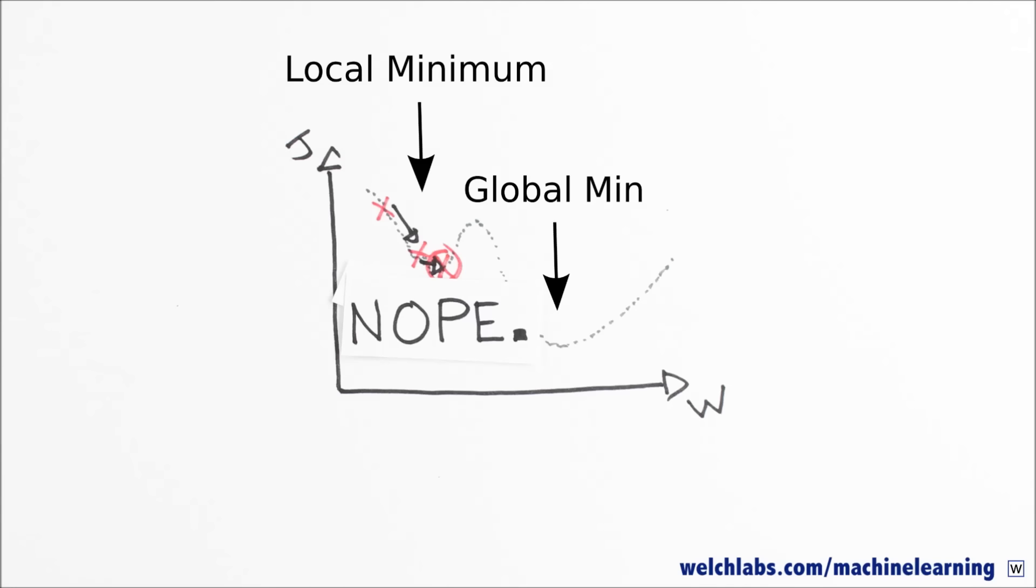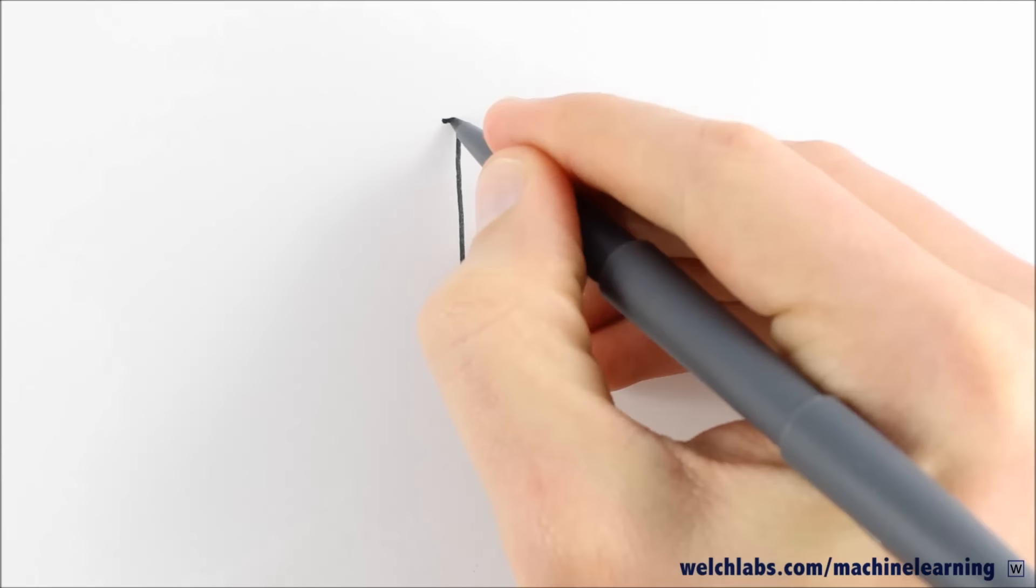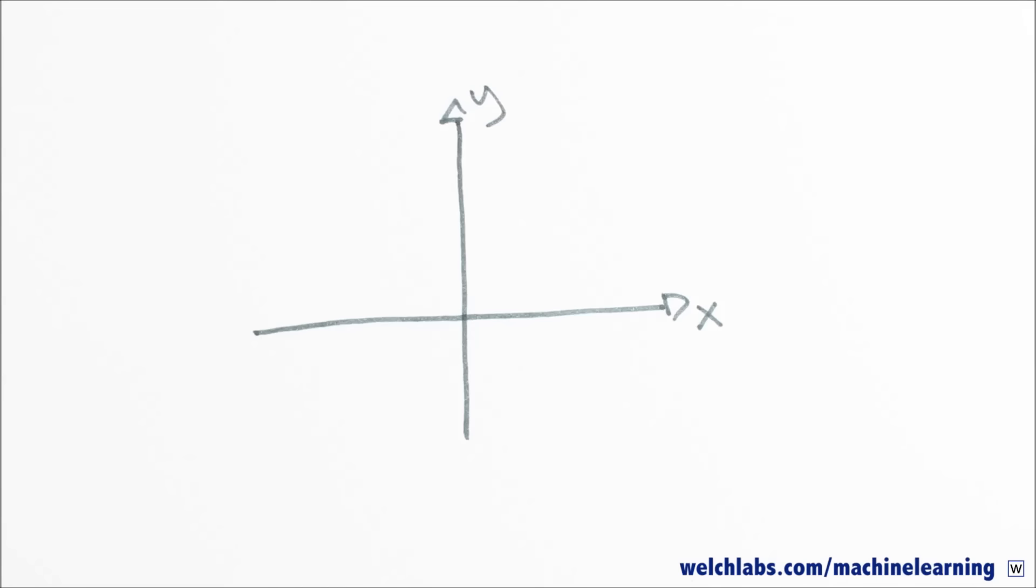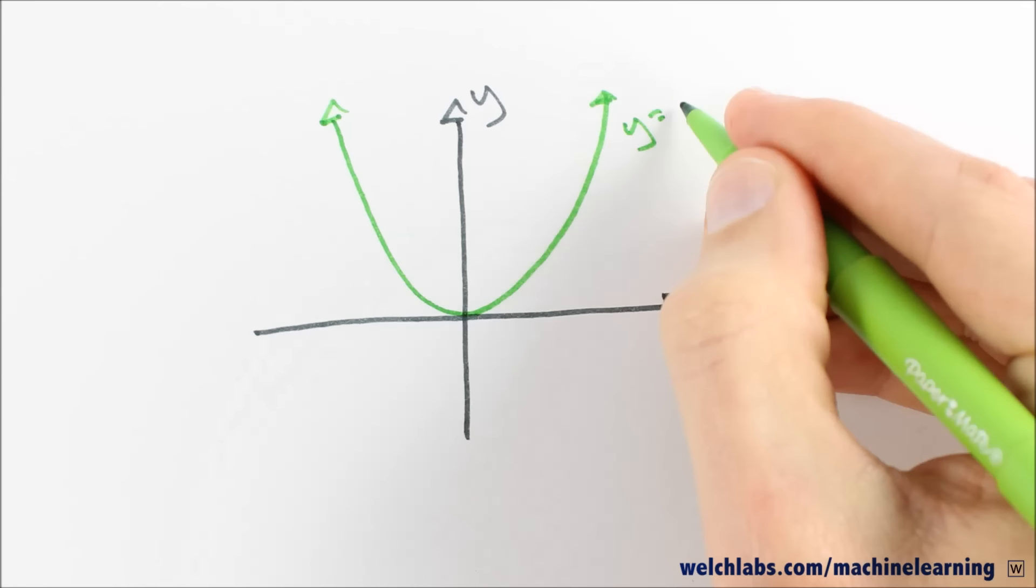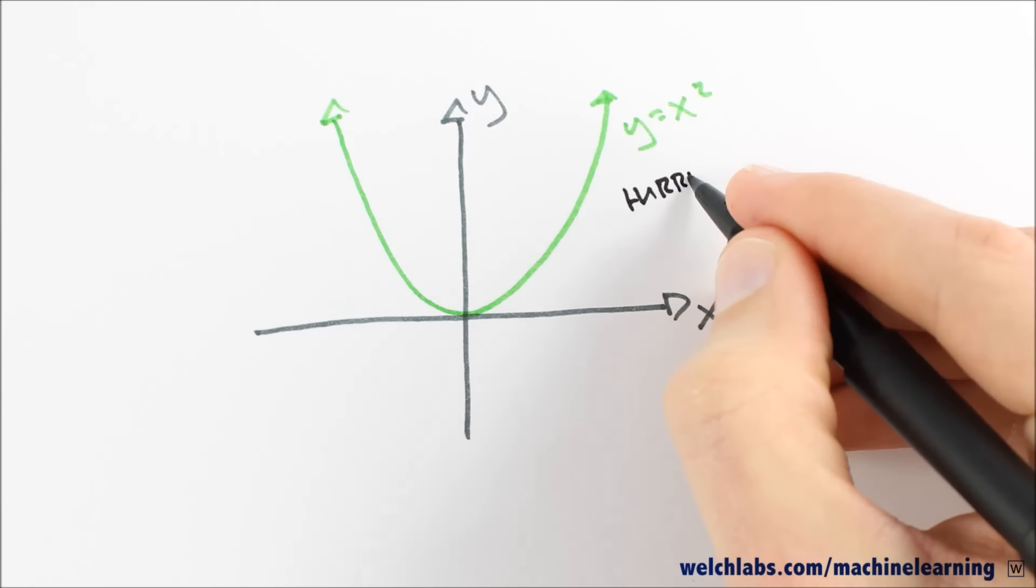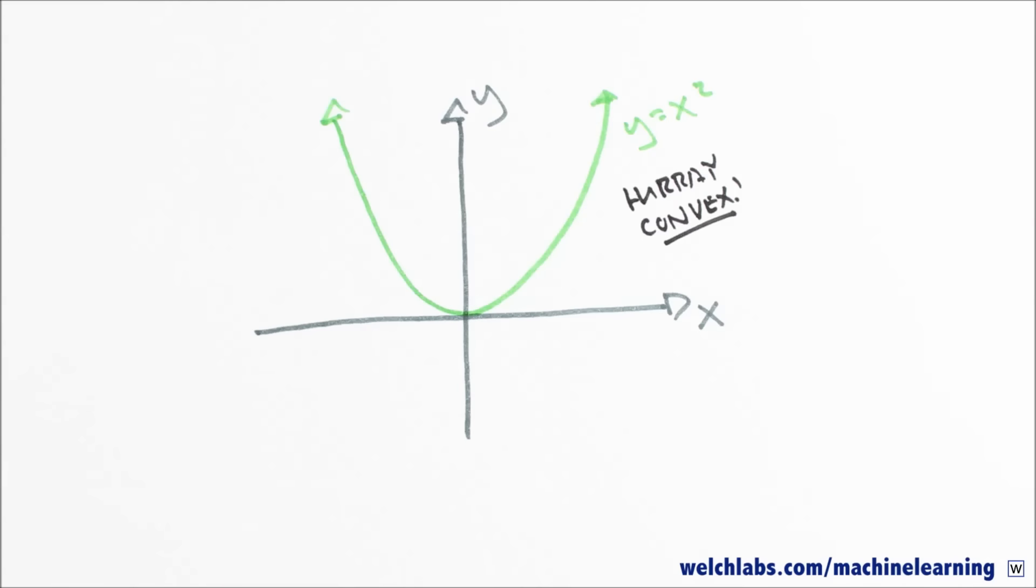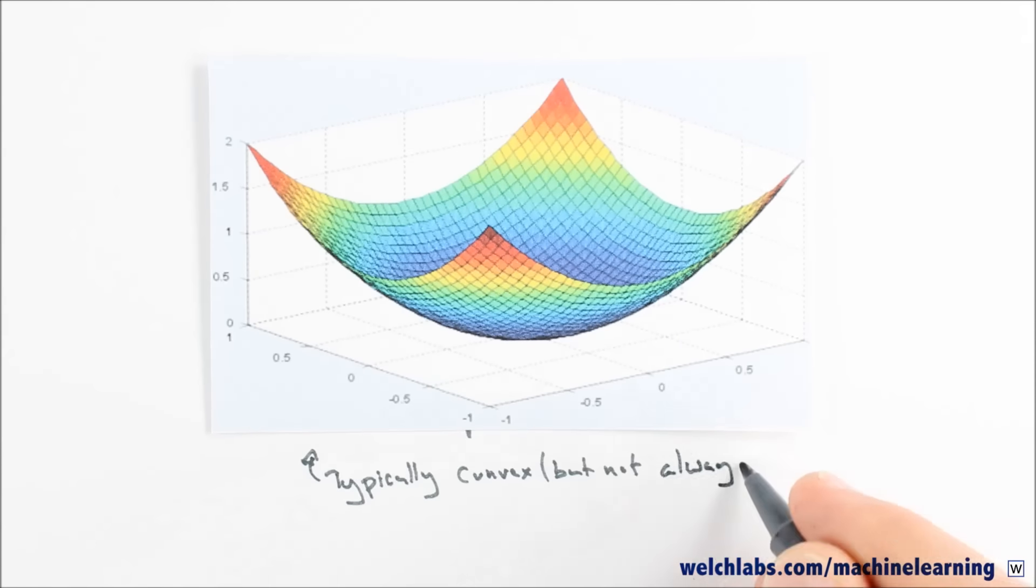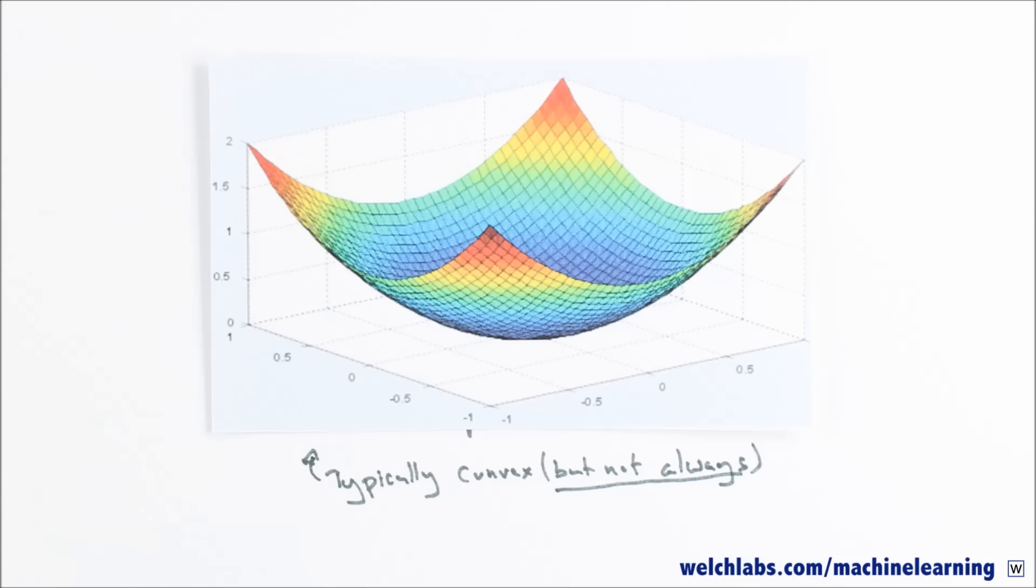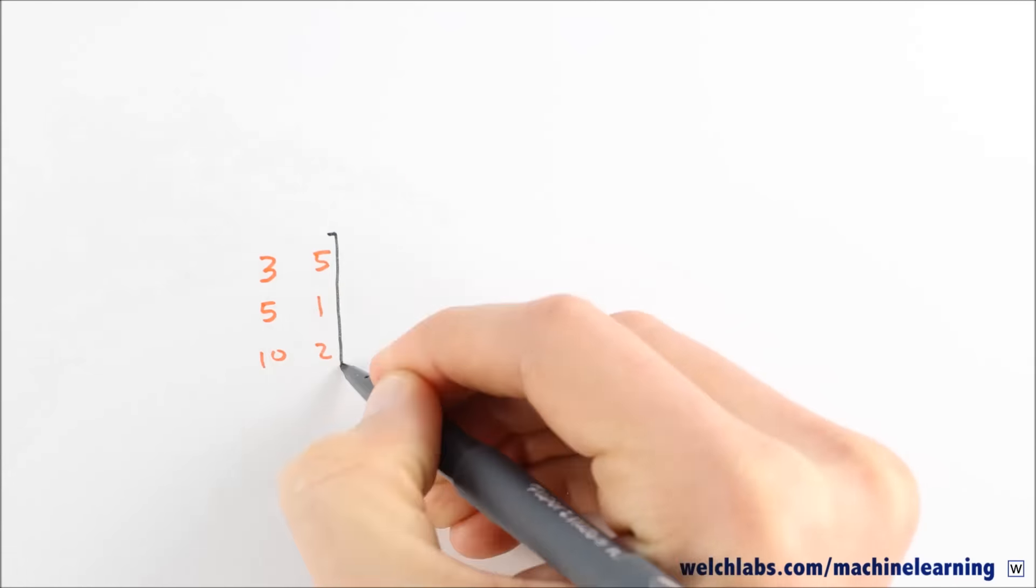One of the reasons we chose our cost function to be the sum of squared errors was to exploit the convex nature of quadratic equations. We know that the graph of y equals x squared is a nice convex parabola, and it turns out that higher dimensional versions are too.